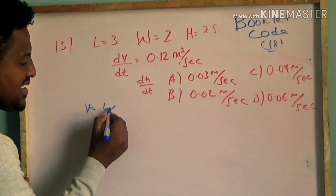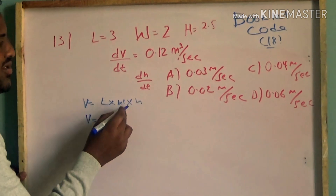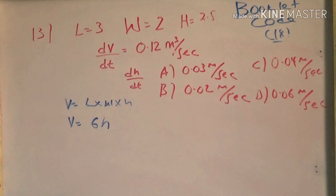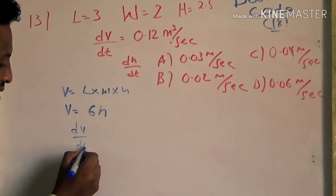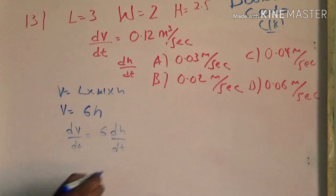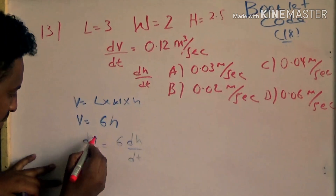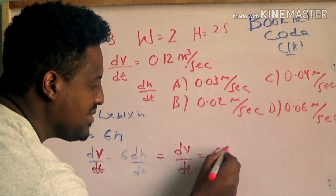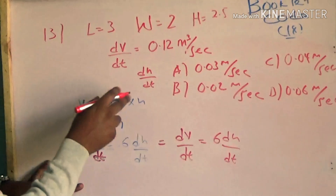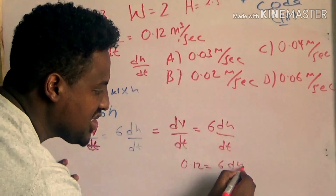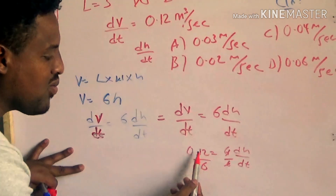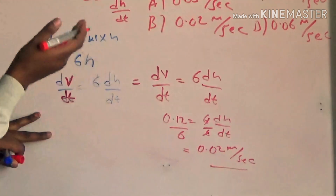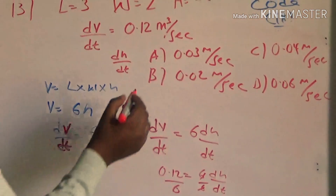Volume equals length times width times height. Volume equals length times width — 3 times 2 is 6. So H equals length times width times height. Differentiating: dV/dt equals 6 times dh/dt. Given dV/dt equals 0.12, then 0.12 equals 6 times dh/dt, so dh/dt equals 0.02 meters per second. The answer is B.